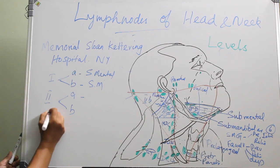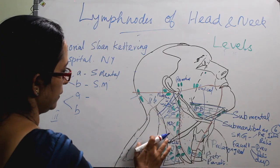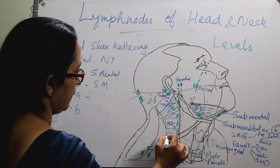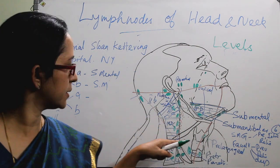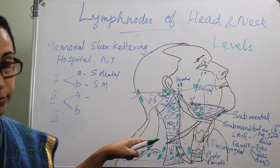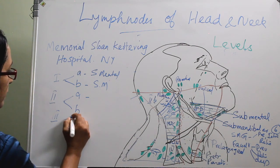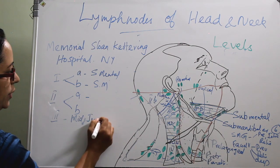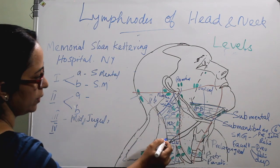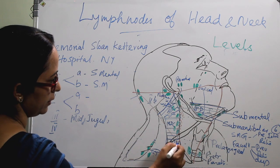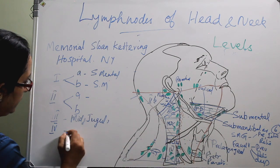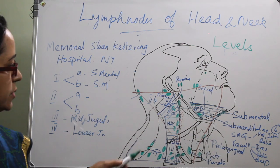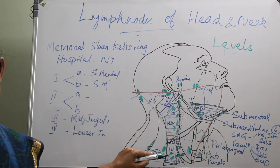Level 3 is the mid-jugular chain, extending from the carotid bifurcation up to the tendon of the omohyoid. Level 4 is the lower jugular chain, from the omohyoid up to the thoracic inlet. For levels 3 and 4, there are no subzones.